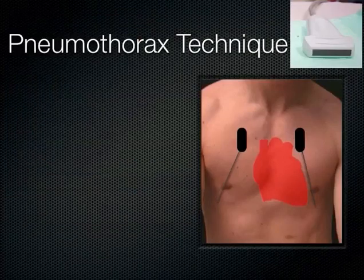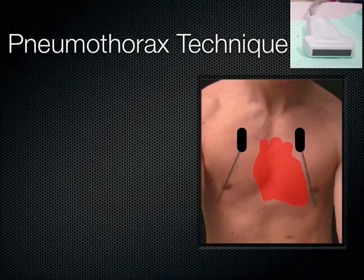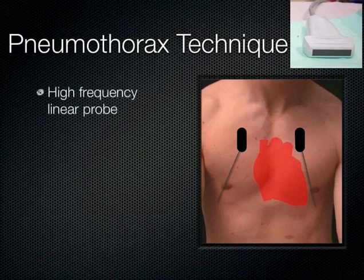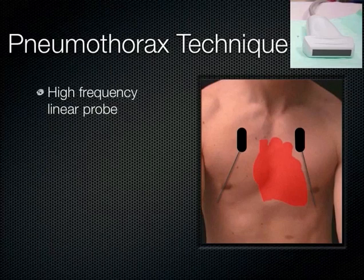For pneumothorax assessment: start at the mid-clavicular line using the high-frequency probe, because we're looking very superficially for the pleural line, which is only a centimeter or two underneath the surface. Start in the second intercostal space with the orientation marker towards the head. Move downwards anteriorly then splay laterally to get images in all four quadrants. On the left you need to go a little more laterally to avoid the heart.